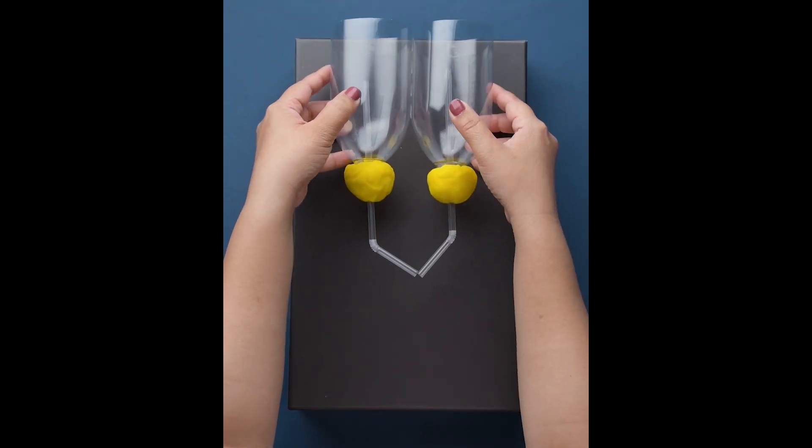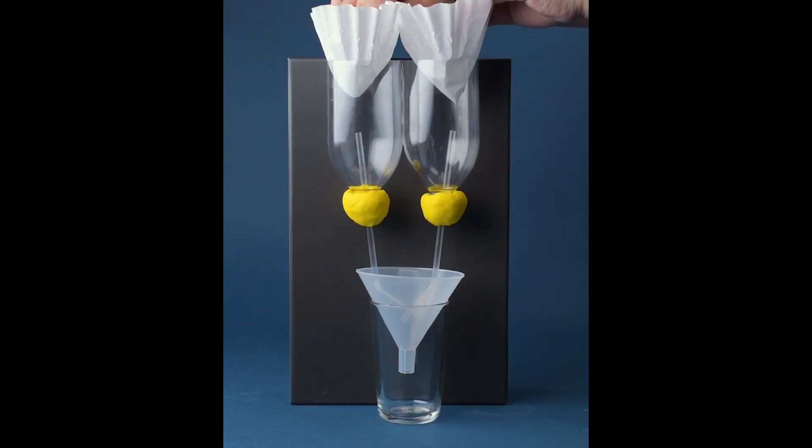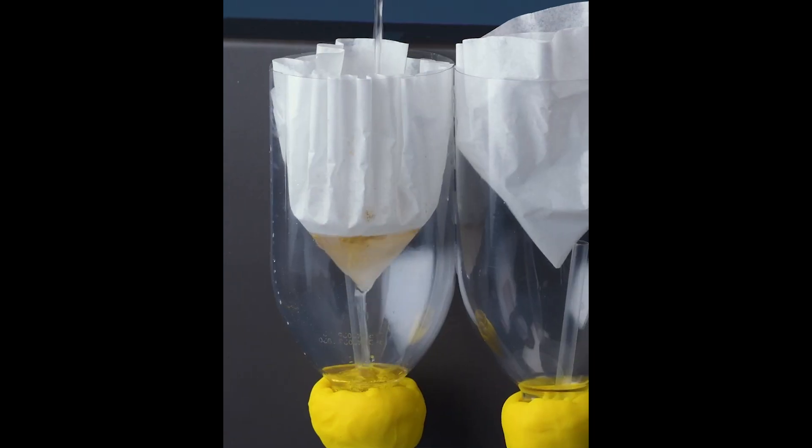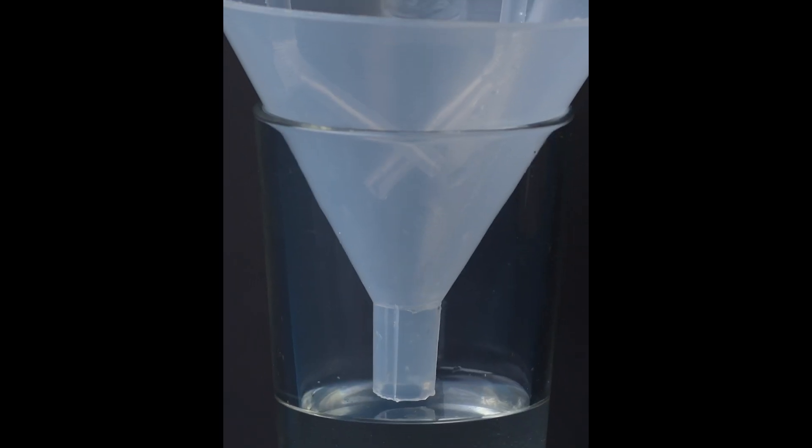Adhere bottles to box. Next, add a funnel and place a glass underneath. Place in coffee filters for your kidneys. Now pour in the glitter water. Watch as your kidney filters out the toxins.